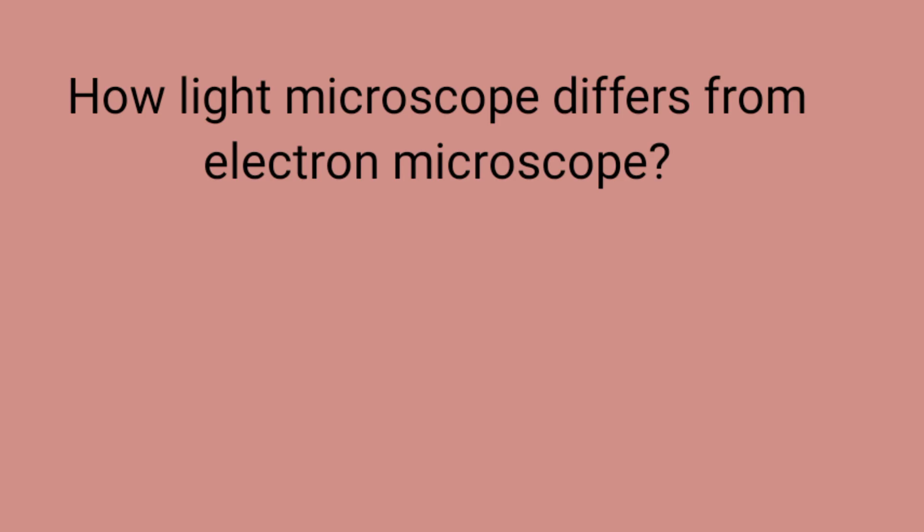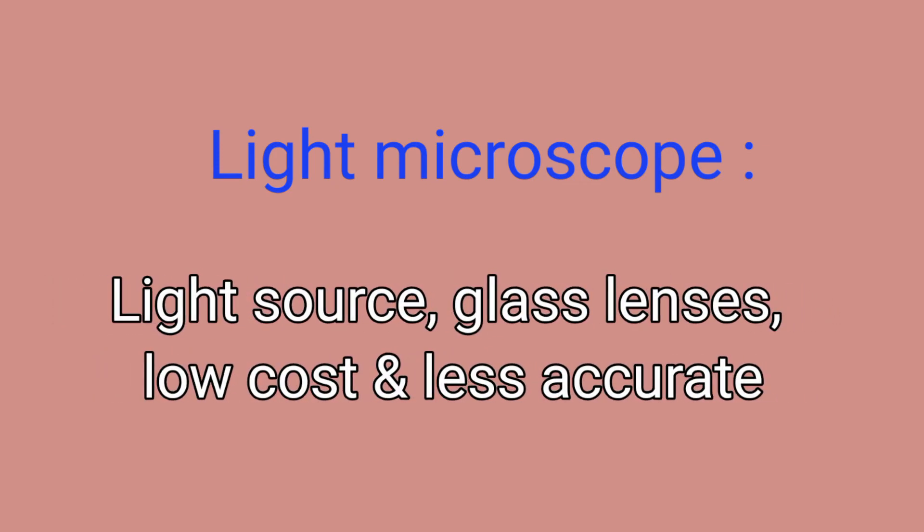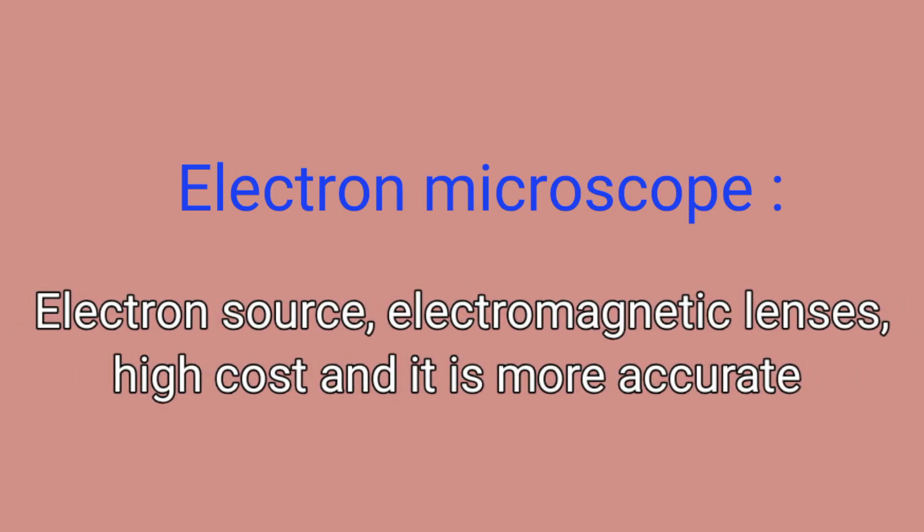Comparison between light microscope and electron microscope: In a light microscope, we have a light source and glass lenses; the cost is low and results are less accurate. In an electron microscope, we have an electron source and electromagnetic lenses; the cost is very high but the results are highly accurate.